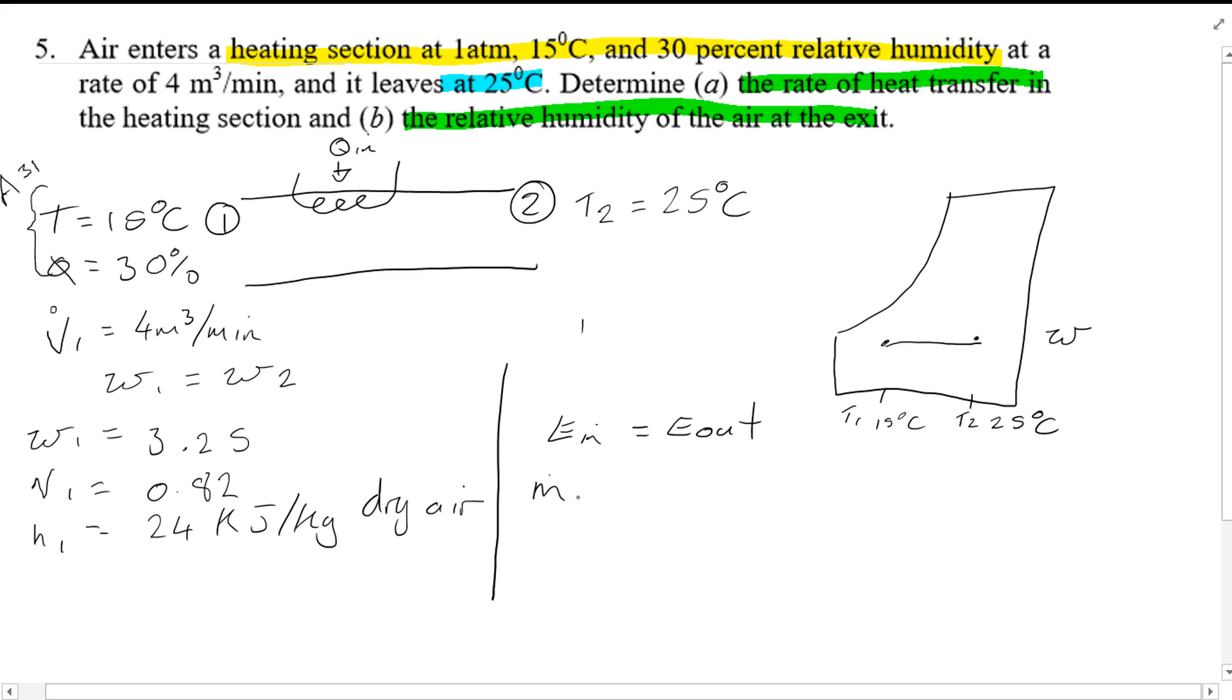We know that the mass flow rate at 1 times H1 plus Q, because it's a heating process, is equal to M2 times H2, the enthalpy at 2. And we can simplify this down because we know M1 is equal to M2, we can easily rearrange this equation here.